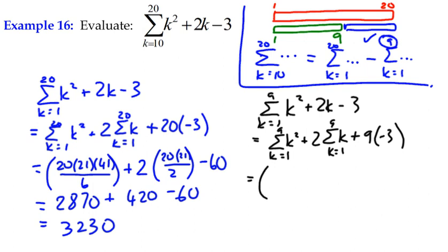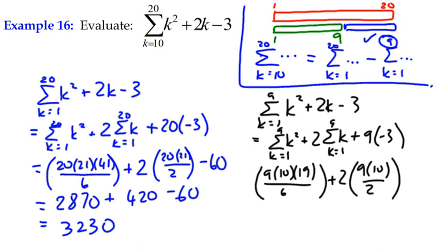So that gives us k squared formulae, is 9 multiplied by 10... wrong one. So k squared formulae is n times n plus 1 times 2n plus 1 over 6, plus 2 lots of 9 times 10 over 2. That's sigma k minus 27.